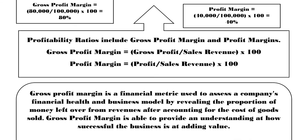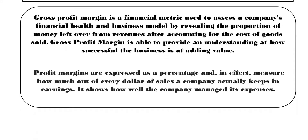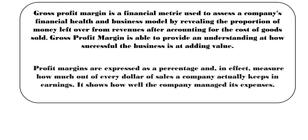Just remember: if the question asks for profitability ratios, make sure you calculate both your gross profit margin and your profit margin and show them as a percentage. In terms of what gross profit means, one key part is adding value. The difference between your revenue and your cost of sales is very similar to total contribution, and it indicates that the business is very good at justifying why their prices are higher than their cost of sales. A high gross profit means they're very efficient at managing their cost of sales.